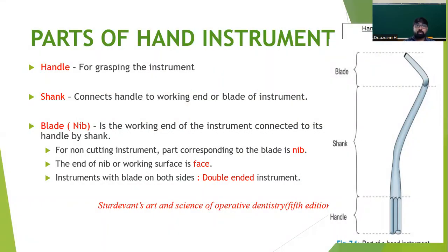A hand instrument mainly consists of three parts: handle, shank, and blade. The handle is the part used for grasping the instrument. The shank connects the blade and handle. The blade is the working end of the instrument, connected to the handle by the shank. In non-cutting instruments, the part corresponding to the blade is called the nib, and the working surface is called the face. Some instruments are designed with blades on both sides — called double-ended instruments.